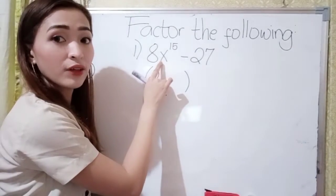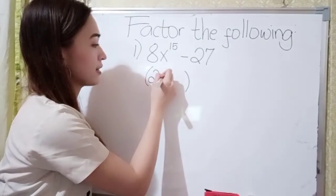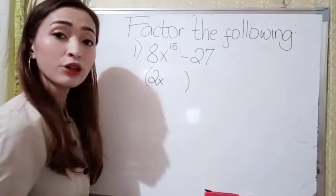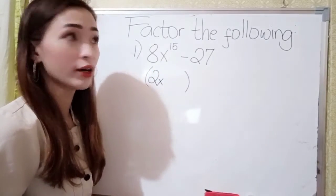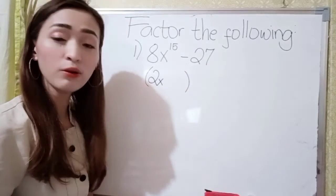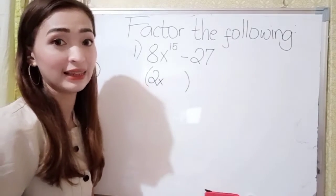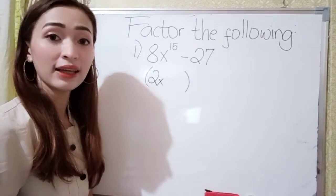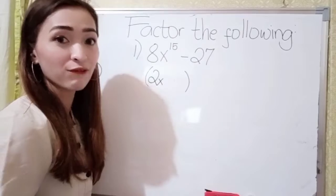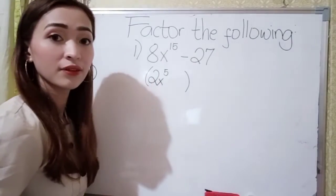Next, we have x here, so just write x. What you're going to do for the exponent is just divide it by 3. So, 15 divided by 3 is 5. So, we have 5 here.